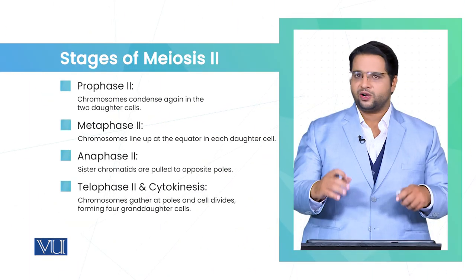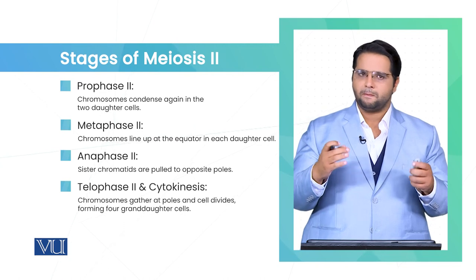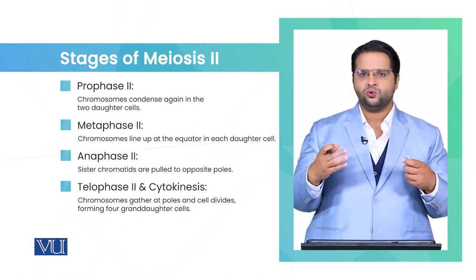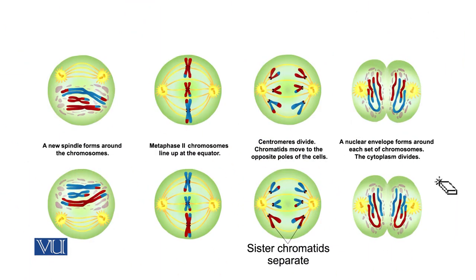Now we are going to discuss the stages of meiosis 2, which consists of prophase 2, metaphase 2, anaphase 2, and telophase 2, followed by cytokinesis. We need to visualize these stages. We now have two daughter cells, and both will undergo meiosis 2. In prophase 2, a spindle forms around the chromosomes, which are already condensed.